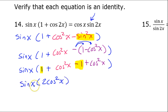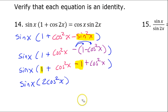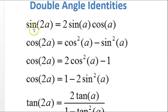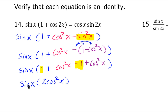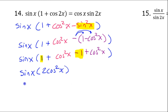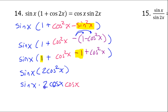I have 2 cosine squared x with sine x out front. Now I'm thinking about my target: I'm trying to get cosine x times sine 2x. If I want sine 2x, I need the formula — that's 2 sine cosine. Can I get 2 sine cosine out of what I have? I sure can. I have sine x, times 2, times cosine squared — and cosine squared is just cosine times an extra cosine.